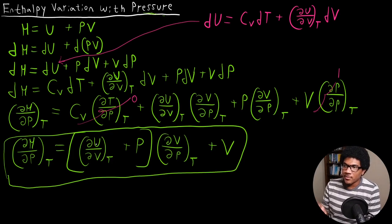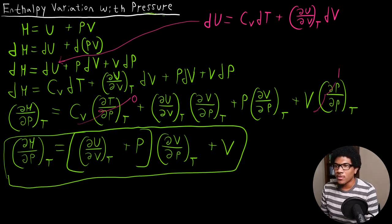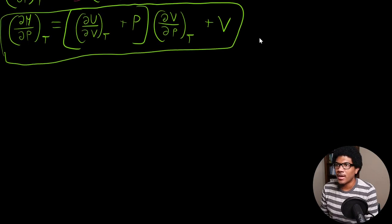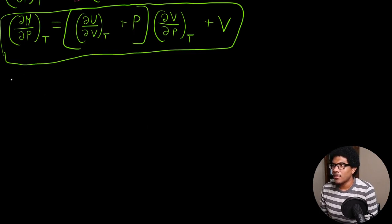This is our general expression for the variation of enthalpy with respect to pressure. It still contains the internal pressure term, and it's actually very similar to the relationship between Cₚ and Cᵥ, except we have the volume term on the outside as well. Now let's assume an ideal gas and see what happens.